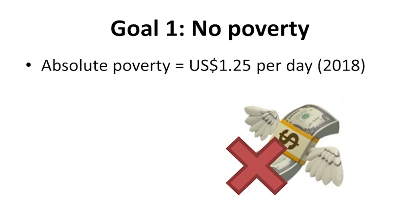This goal also involves moving people out of the poverty line according to each nation's standard by 50%. Furthermore, to protect people that are poor, the goal also aims to implement social protection systems to help the needy in every society.